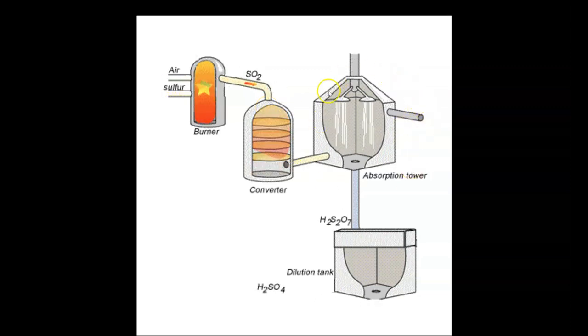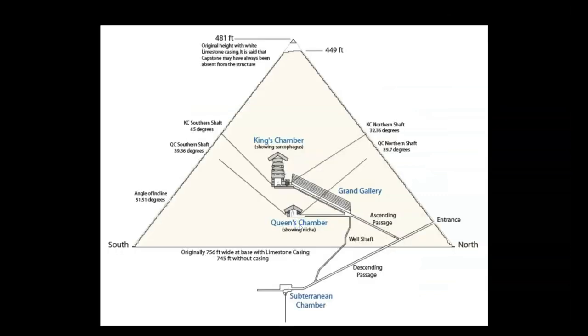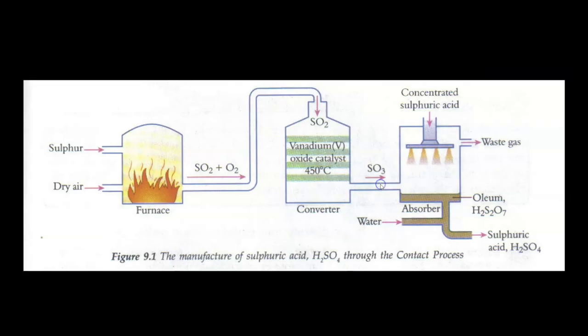I've explained in previous episodes how the Great Pyramid is configured to do the same thing, with your furnace chamber here, a catalyst chamber of sorts here, the absorption tower here, and your extraction chamber here. Now another major difference to point out is that in our modern process there is an intermediate step involving oleum and concentrated sulfuric acid.